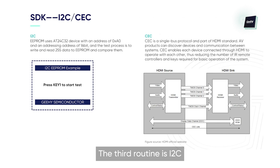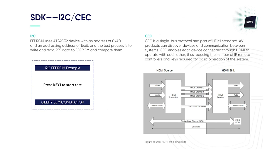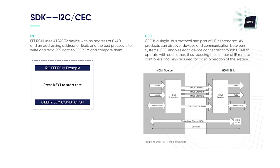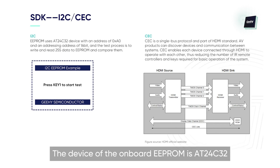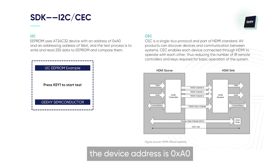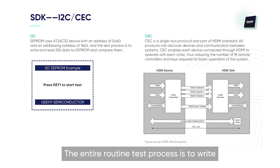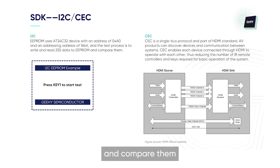The third routine is I2C. The I2C here is mainly used for reading and writing the onboard EEPROM. The device of the onboard EEPROM is a 24C32. The device address is 0xA0 and the addressing address is 16 bits. The entire routine test process is to write and read 255 data into EEPROM and compare them.